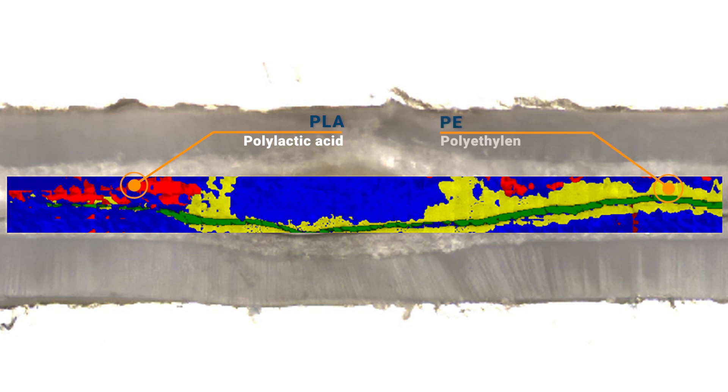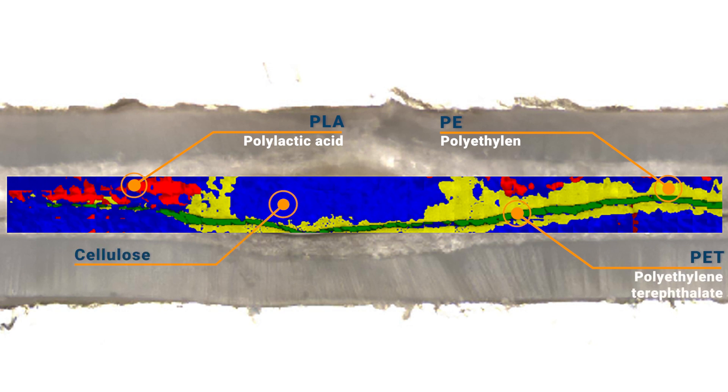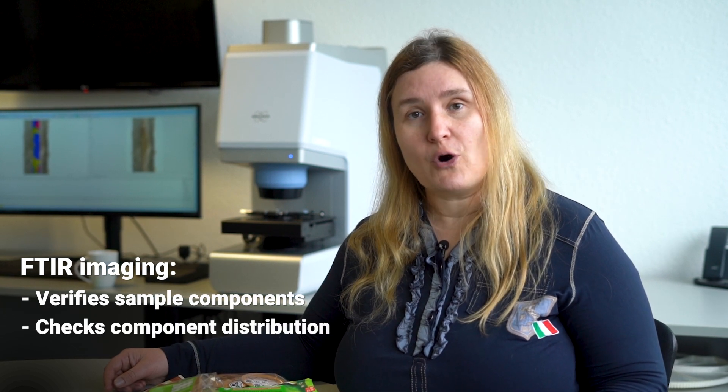Polylactic acid is shown in red, polyethylene in yellow, and polyethylene terephthalate in green. The blue areas are cellulose. FTIR imaging not only shows that all relevant components are present, but also that the component distribution is optimal.